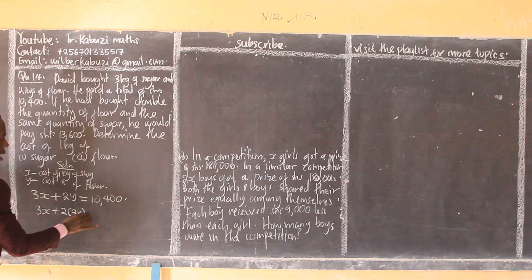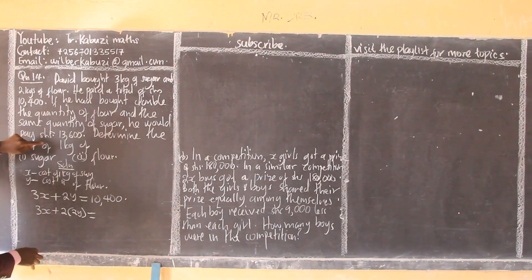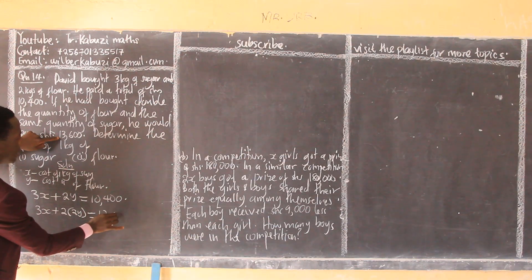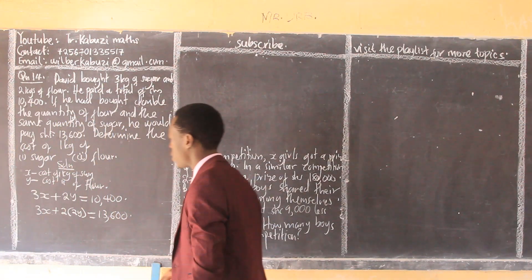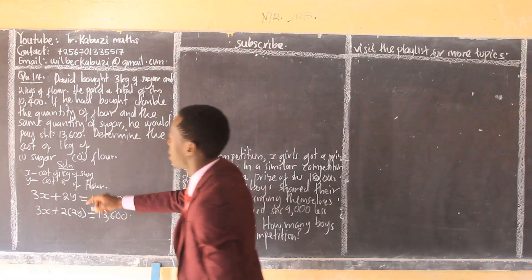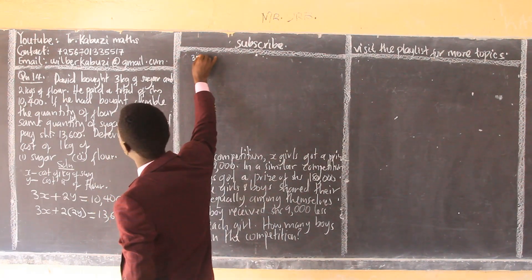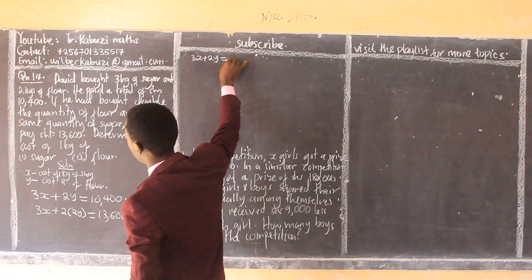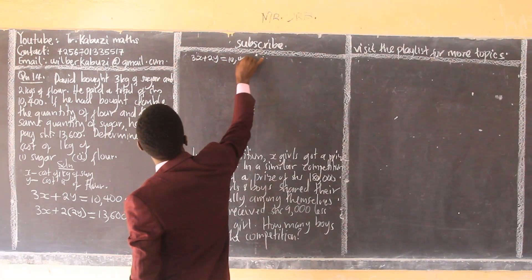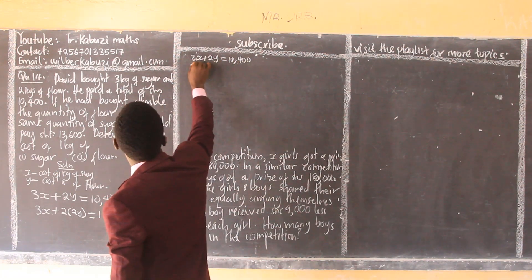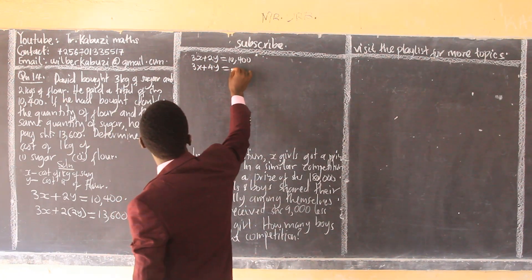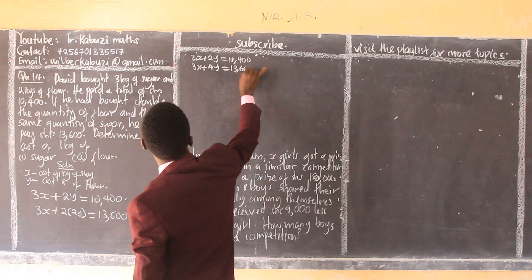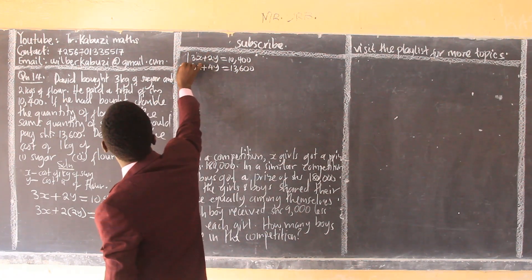If he doubles the quantity of flour, the total would be thirteen thousand six hundred. So we are having two simultaneous equations to solve. Writing the second equation: 3x + 4y = 13,600.